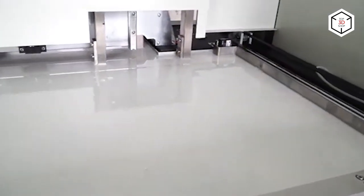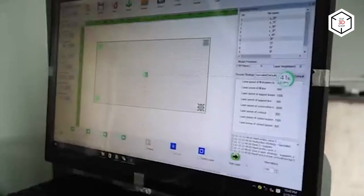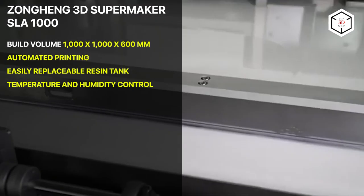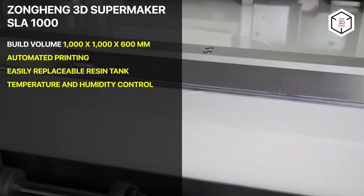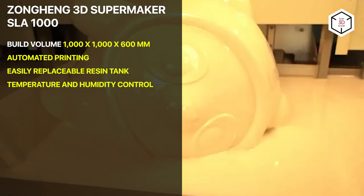A fully automated process with an intelligent parametric control system managing parameters like monitoring and adjusting of the resin level helps to execute the concept of automatic printing. Supermaker SLA 1000 can print layers at a minimum layer height of 50 microns. The printer is compatible with the wide range of general and specific purpose resins.